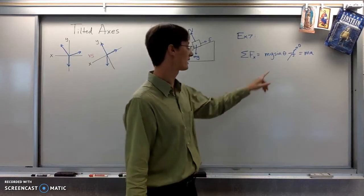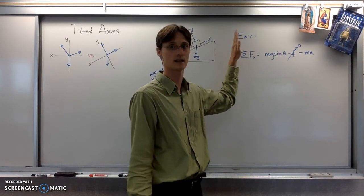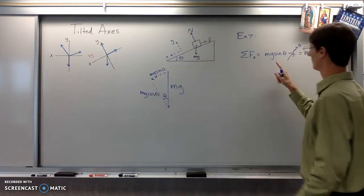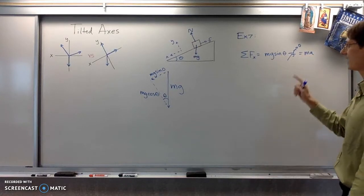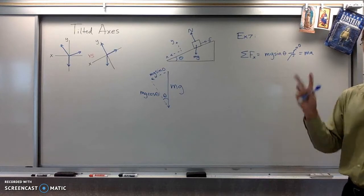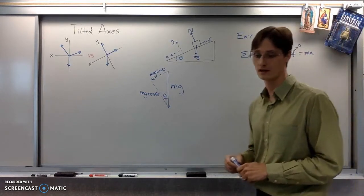For that matter, if you plug in sine of 90, like a vertical drop, not inclined at all, sine of 90 is 1. And so that would mean the m's would cancel and would have the accelerations just g on a vertical surface. So it works.